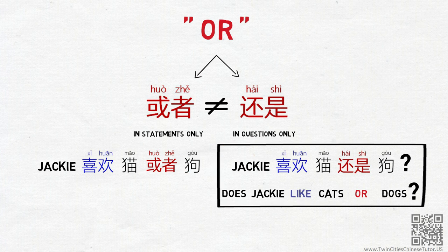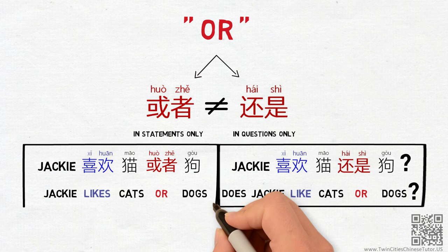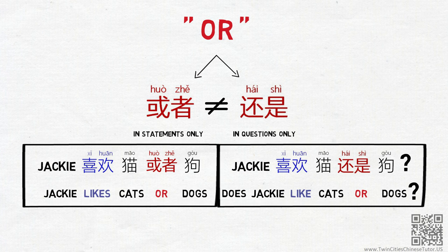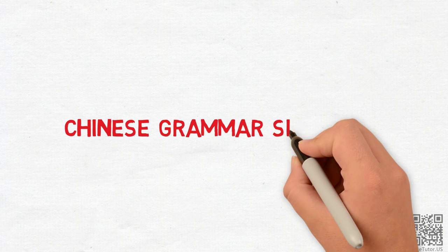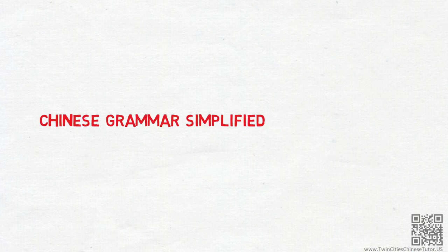Jackie喜欢猫或者狗 is a statement, meaning, Jackie likes either cats or dogs. I hope you find this video helpful, and if you have any questions about any particular grammar patterns and you would like more explanation, please leave a comment below.